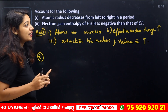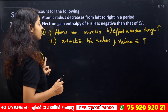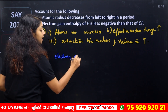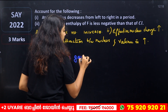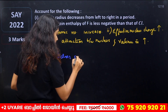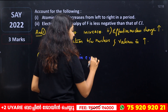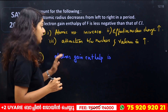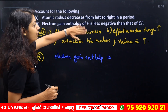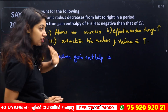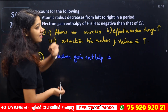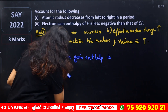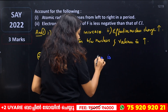The electron gain enthalpy of fluorine is less negative than that of chlorine. That means fluorine's electron gain enthalpy is less negative than chlorine's — so electrons are more easily accepted by chlorine, not fluorine. That's the meaning of the statement.